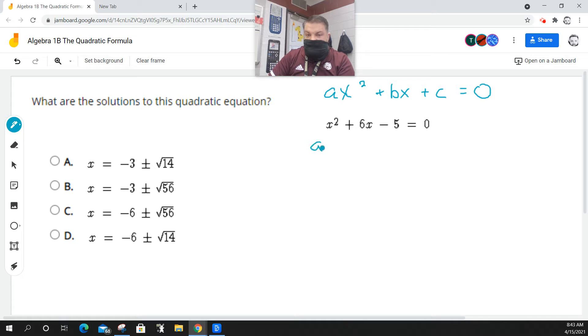Now, so then what's a? A is equal to one, because it's not written, but it's implied. B is the coefficient of x to the first power. So, b is equal to positive six. And then c is the constant, right? So, c is equal to negative five.